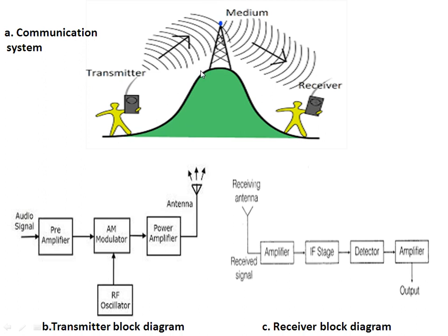Now in this slide, if you see the first diagram A, it is a communication system. In this diagram you can see one transmitter on the left side, one receiver on the right side, and some data or waves are flowing in between them through some kind of a media. This is the overall block diagram of a communication system, where the transmitter sends some information to the receiver through some channel or media — here we are talking about wireless media.